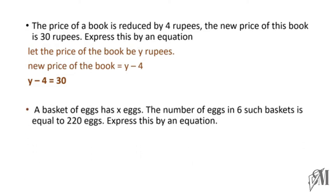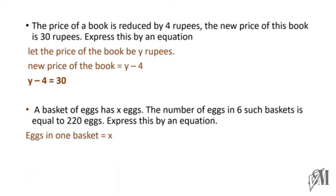A basket of eggs has x number of eggs, and the number of eggs in six such baskets is equal to 220 eggs. We are going to express this by an equation. The number of eggs in one basket is x, and the number of eggs in six baskets is x multiplied by 6, which is 6x. In six baskets there are 220 eggs, therefore 6x is equal to 220.